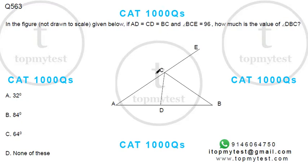Hi, this is a pretty simple question on geometry, an application of triangles that came in CAT previously. Let's see what this says. In the figure below, not drawn to scale, AD is equal to CD is equal to BC.